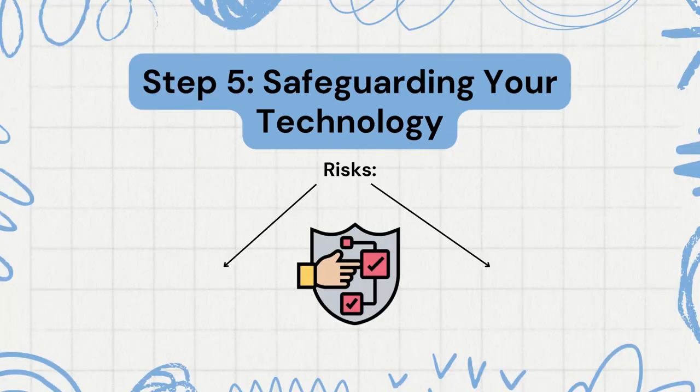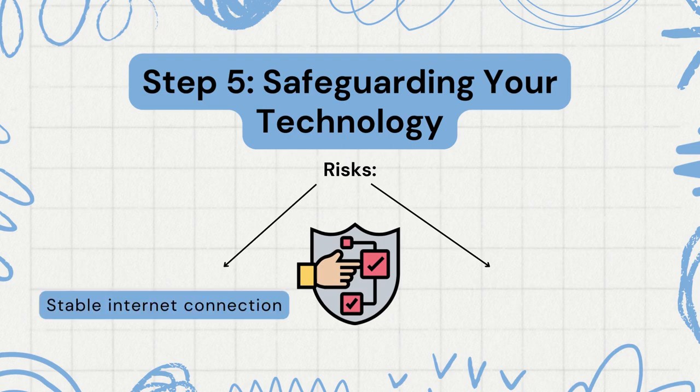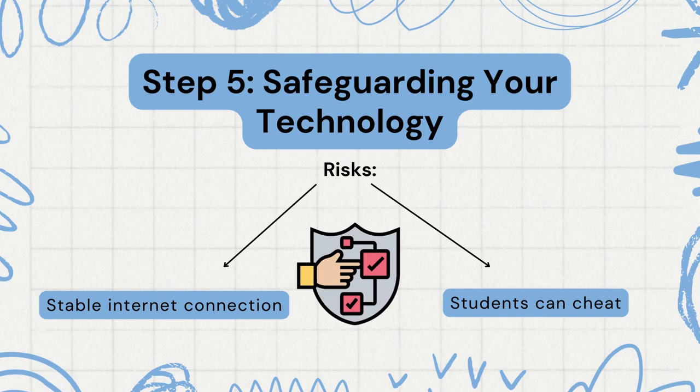The fifth step of the process is called safeguarding your technology. In this step I will go over the risks of using Blookit. A risk is that you need a stable internet connection in order to access it. Another risk is that students can cheat on the game by giving themselves more points.